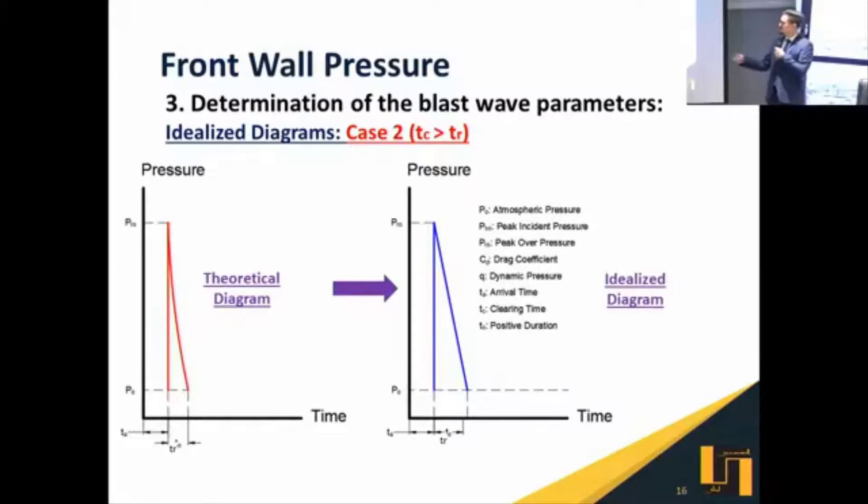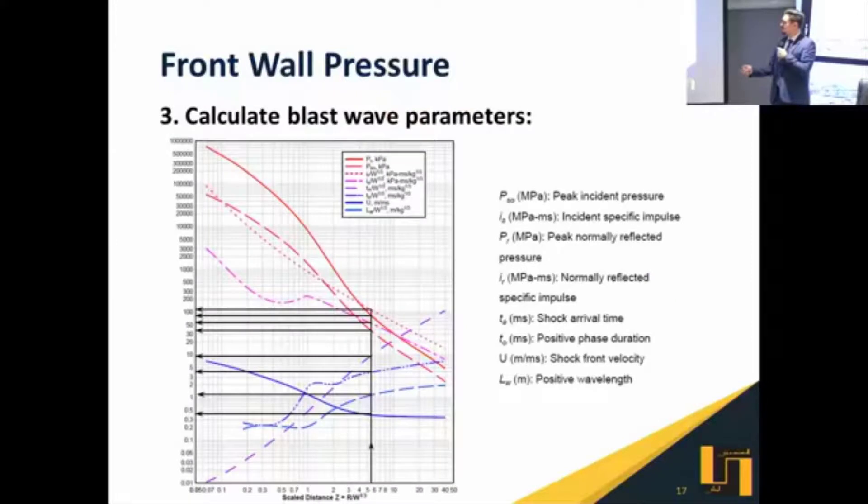This leaves us with two cases. For low pressure diagrams, we have the theoretical diagram and the idealized diagram proposed by the UFC code. The second case is for high pressure values; we also have the theoretical diagram compared to the idealized diagram. After I defined all these blast wave parameters, we enter the chart. This is a chart provided by the UFC code. The x-axis represents the Z or the scale distance factor. We determined the value as 5.34, so we enter the graph. We go up, we have eight curves, each curve for one of the parameters. The parameters are the peak incident pressure, incident impulse, reflected pressure, reflected impulse, shock time arrival. We already discussed all these parameters. So you go up, you intersect with the curve, you go horizontally and you get your value.